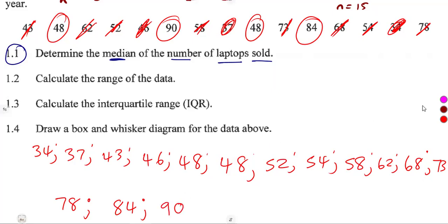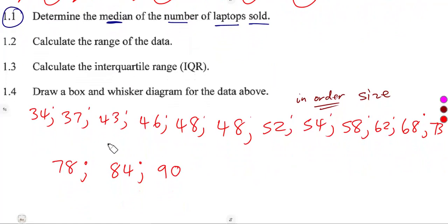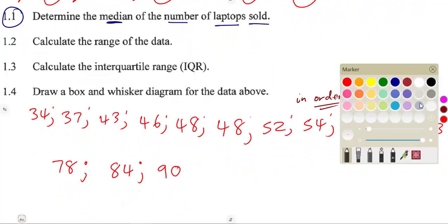These are the numbers arranged in ascending order of size. This makes it easier to determine the median. We can cancel from both ends toward the middle term, or we can use the formula.